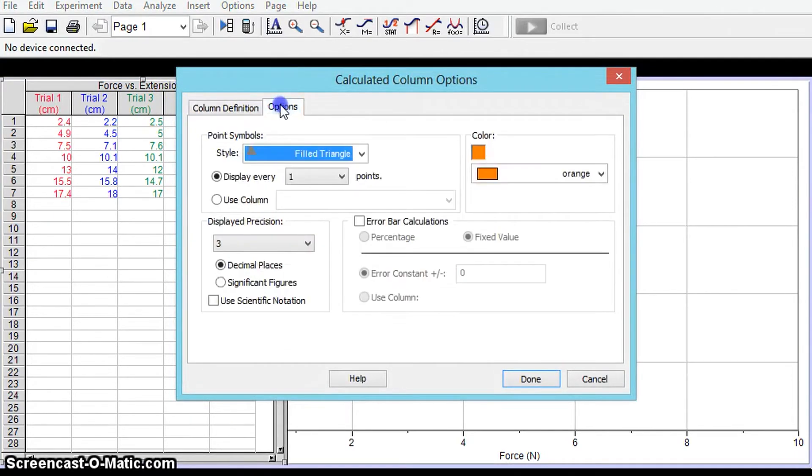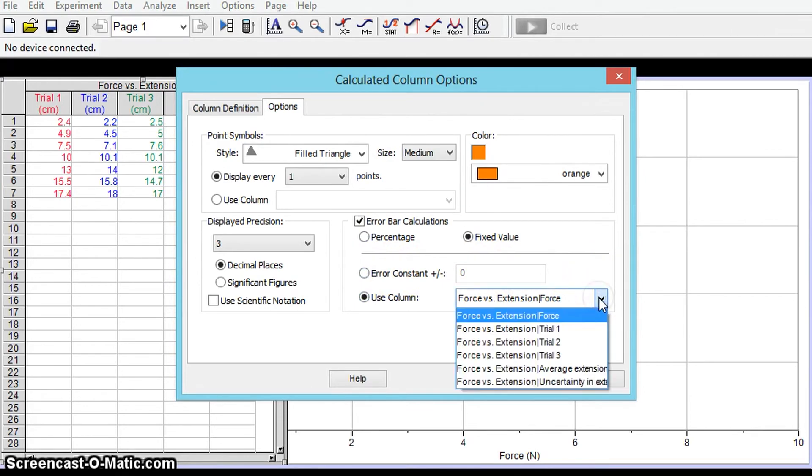Click on options error bar calculations so they're fixed values they're not percentages and I'm going to use the column to fill in the error bars. Click on the down arrow here.